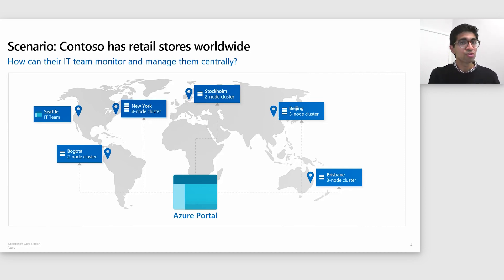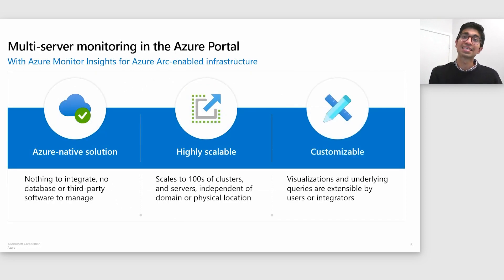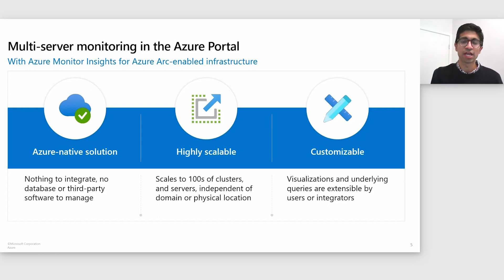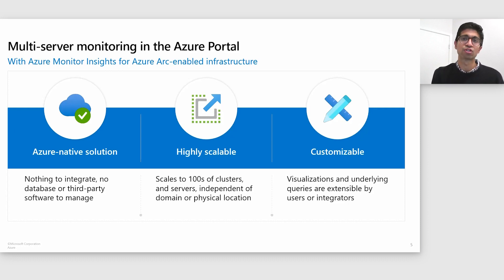Contoso uses Azure Monitor to manage all of their existing cloud infrastructure, and continues to use Azure Monitor to manage their on-premises infrastructure too. Because all of these clusters are Azure Arc-enabled, they're able to leverage the power of Azure Arc to monitor all of their infrastructure centrally via Azure Monitor. They're able to centrally monitor all of their infrastructure, build custom visualizations and dashboards, and scale to monitoring hundreds of servers and clusters as their retail business grows.